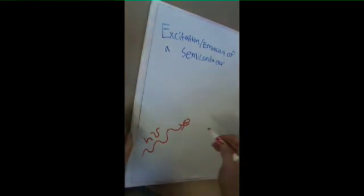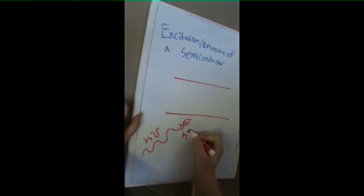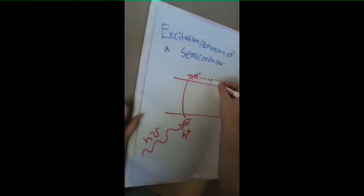Now for the excitation and emission of a semiconductor. When a photon interacts with an electron in a bulk semiconductor, the electron jumps up to the conduction band and leaves the hole behind. Eventually the electron will recombine with the hole and form another photon of that same energy.